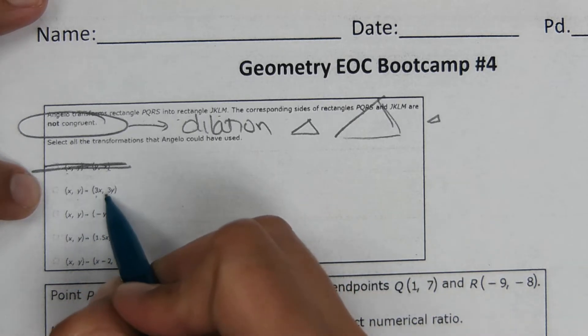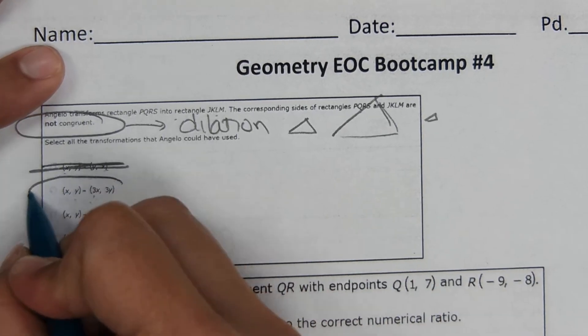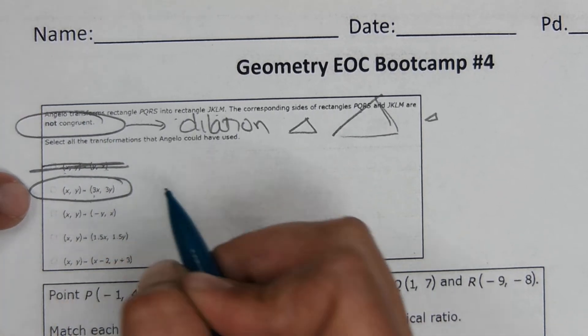This one, they're multiplying the coordinates by three. So that means that the shape is growing by a scale factor of three. So this one, not congruent to the original and it's what we're looking for.